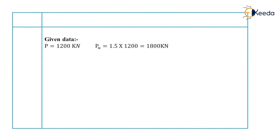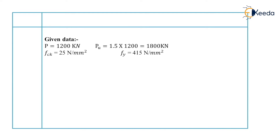Here is the given data. The axially loaded column is given. Axial load is given as 1200 kN. Therefore, factored load is equal to 1.5 into 1200, which is equal to 1800 kN. FCK is given as 25 N per mm square and FY is given as 415 N per mm square. Diameter of column is given as 400 mm and the length is given as 3 m.